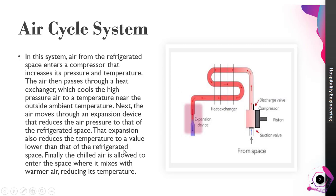In this system, air from the refrigerated space enters the compressor, which increases its pressure and temperature. The air then passes through the heat exchanger, which cools the high-pressure air to a temperature near the outside ambient temperature. Next, the air moves through an expansion device that reduces the air pressure to that of the refrigerated space. The expansion also reduces the temperature to a value lower than that of the refrigerated space. Finally, the chilled air enters the space where it mixes with the warmer air, reducing its temperature.